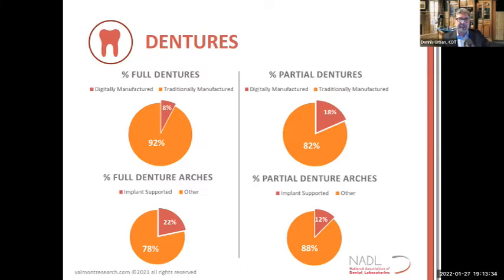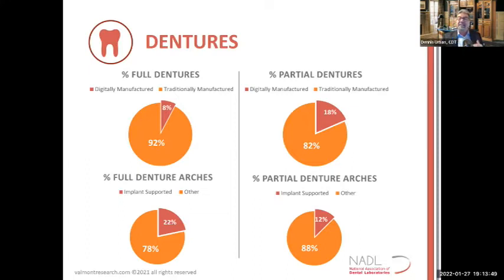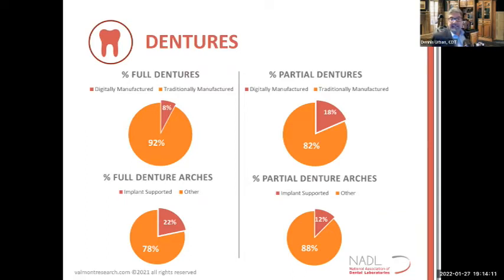The amount of full denture arch cases with implants is about 78%. Looking at partial dentures, traditionally manufactured is still about 82%, but you'll see a lot more digital partials in the next year or so because it's so predictable — what you see on the screen when designing is what you get, whether milled, printed, or sintered. The percentage of partial denture arches with implant support is about 88%.